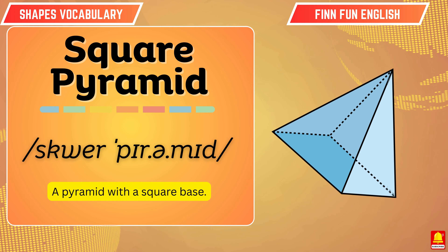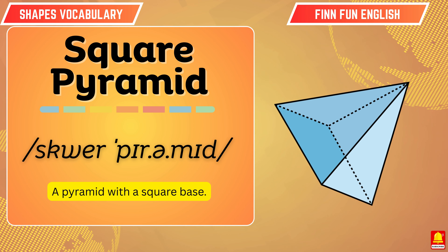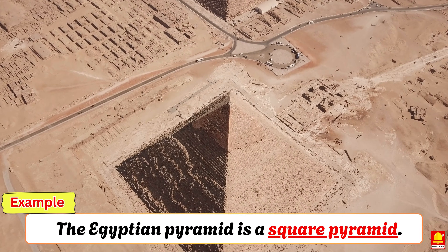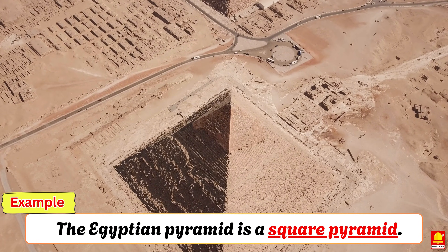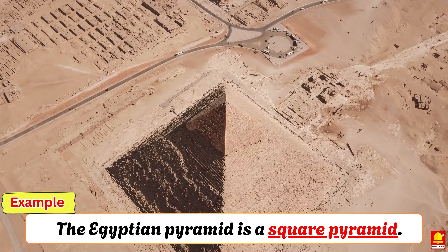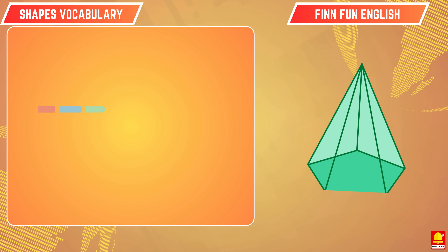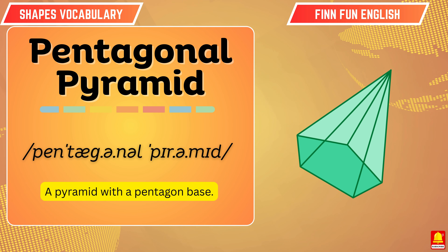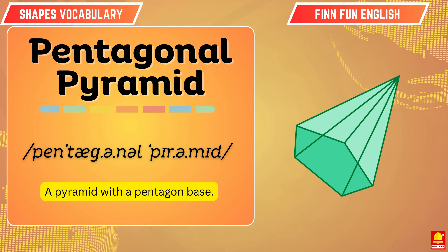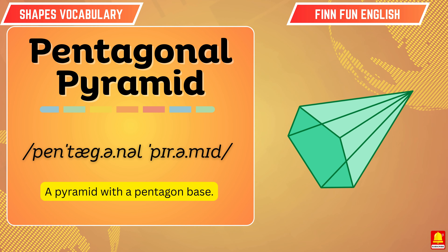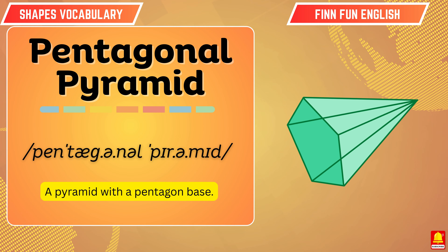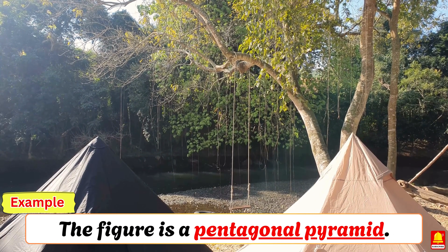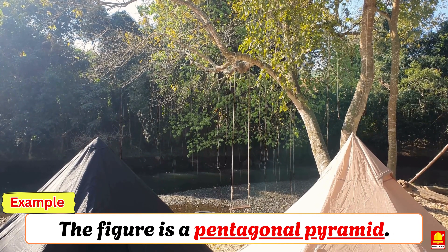Square pyramid. An Egyptian pyramid is a square pyramid. Pentagonal pyramid. The figure is a pentagonal pyramid.